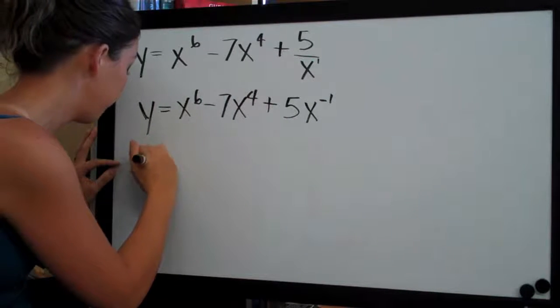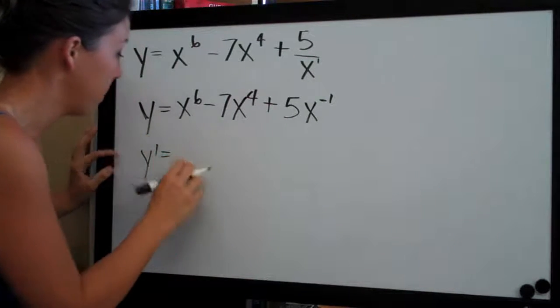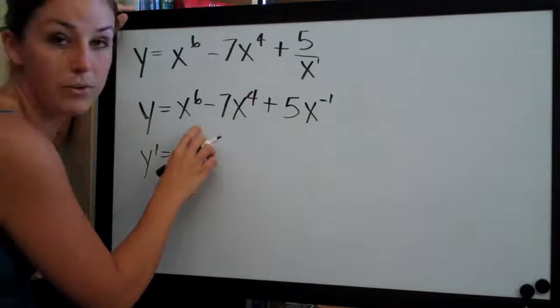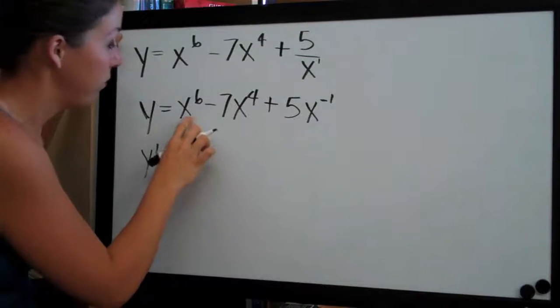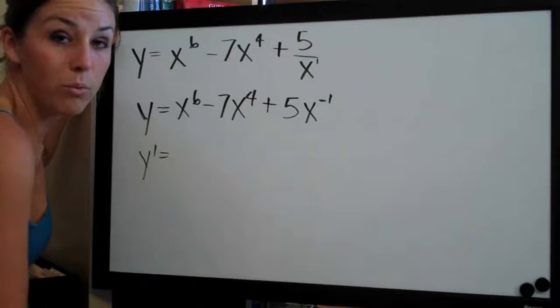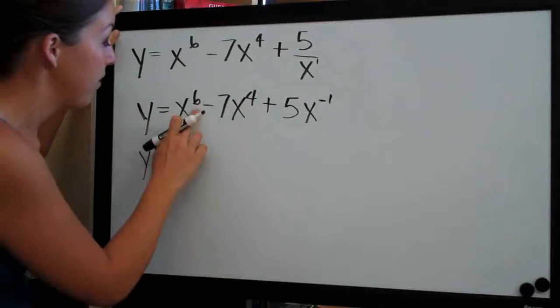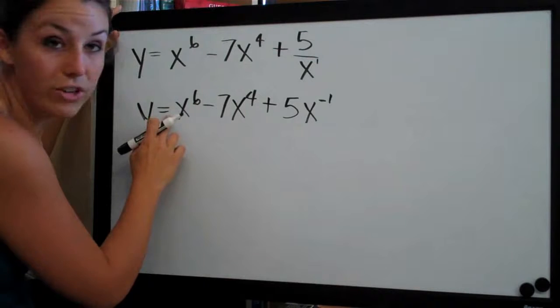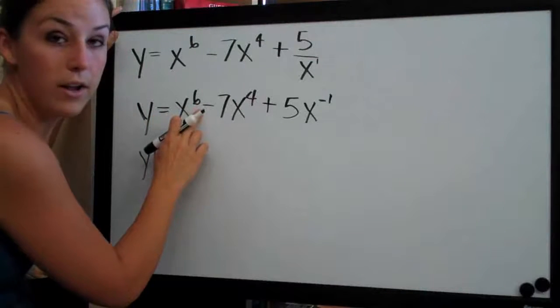So when we take the derivative, we'll call it y prime, and again remember when we're taking basic derivatives, all three of these terms, we'll simply use the power rule where we multiply the exponent by the coefficient and then simply subtract 1 from the exponent.